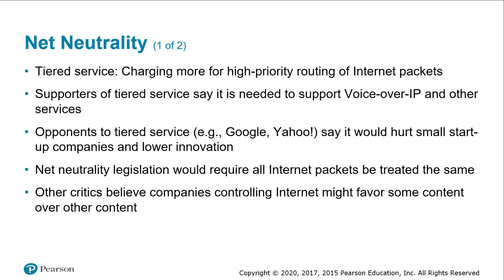Another argument against tiered service was concern that companies controlling the internet might block or degrade access to non-favored content. For example, a customer with an AT&T Yahoo DSL connection might find that high-definition video from AT&T channels performs better than video from other providers. Net neutrality advocates said this would be unfair, noting that 95% of customers have only two choices for broadband access: the local cable company or the local telephone company.